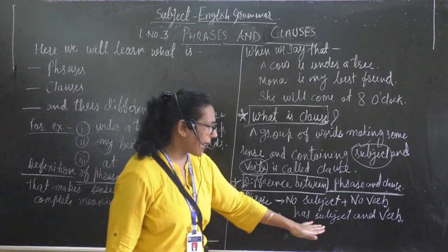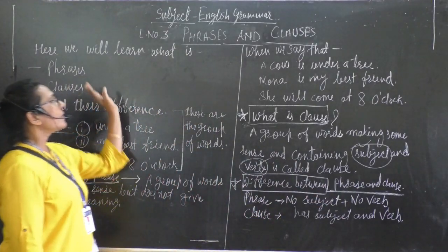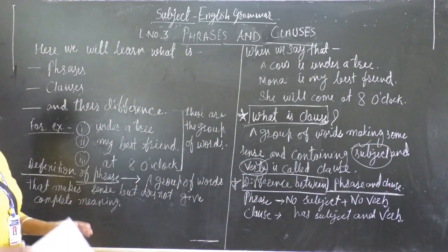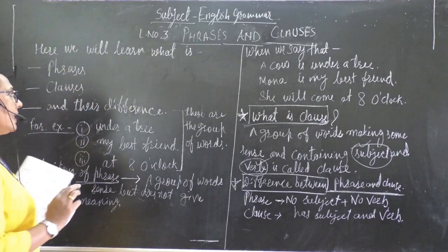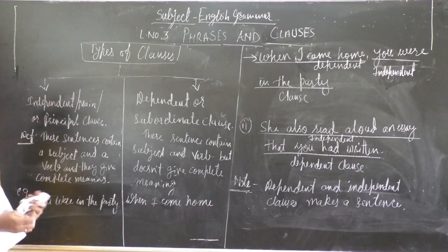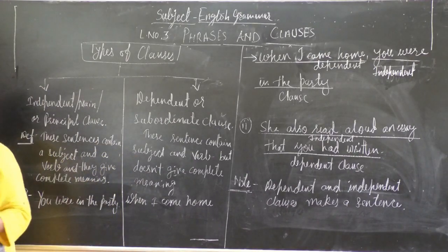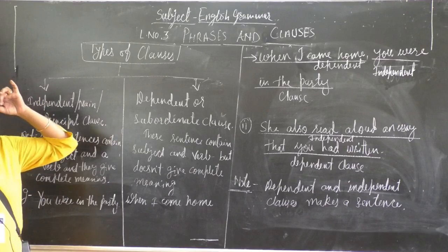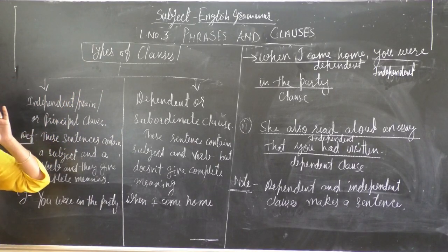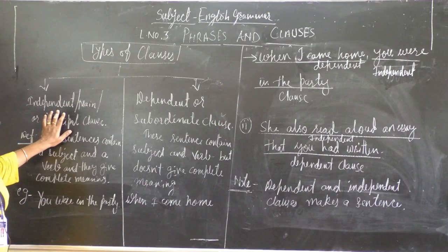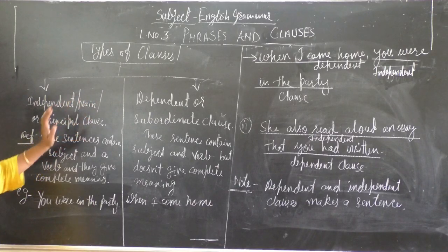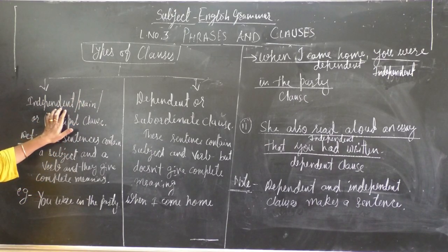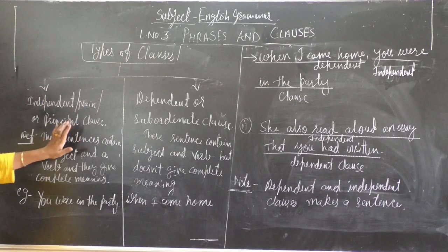So, we have learnt phrases, clauses, and their differences. Now we will learn the types of clauses. There are two types of clauses: the first is the independent clause — also called the main clause or the principal clause. The three names are: independent, main, and principal.